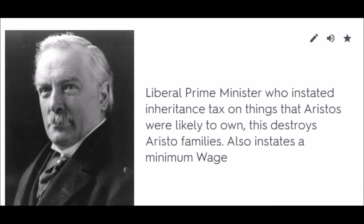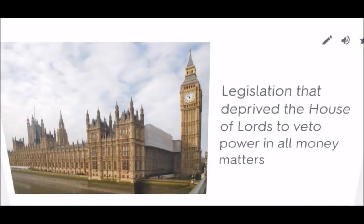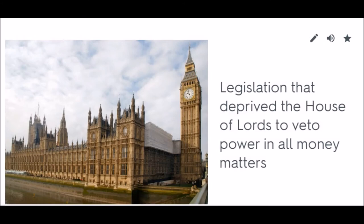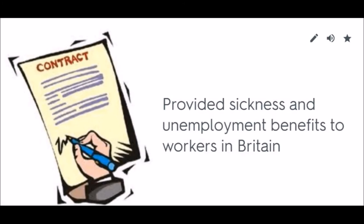Parliament Act of 1911: Legislation that deprived the House of Lords of veto power in all money matters. National Insurance Act 1911: Provided sickness and unemployment benefits to workers in Britain.